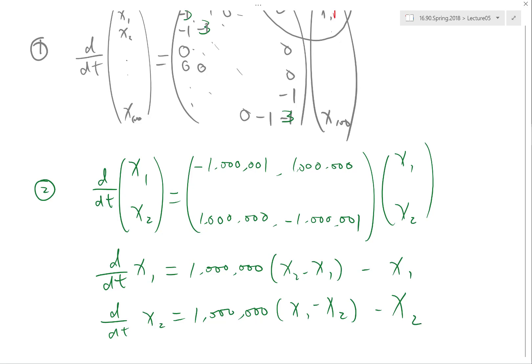That's an example of a stiff system, and heat transfer is another example of stiff system if you have heat transfer between two things that are very fast and then other heat transfer that is very slow.